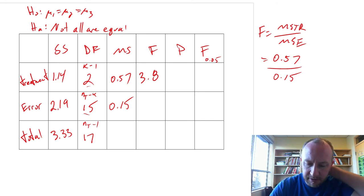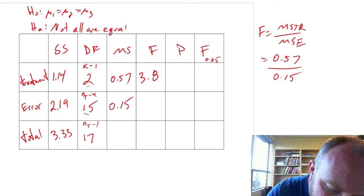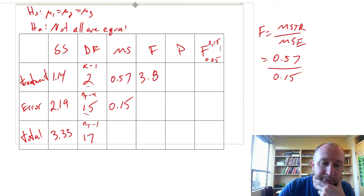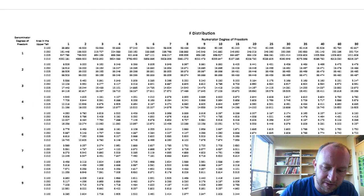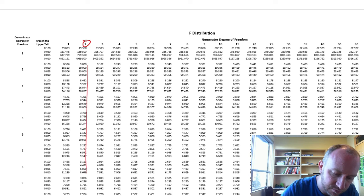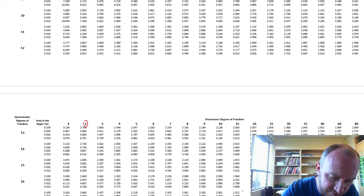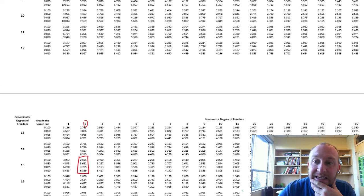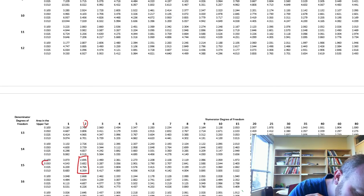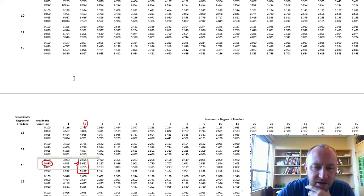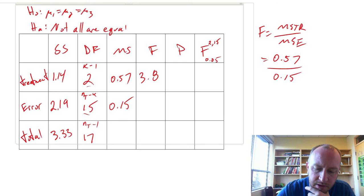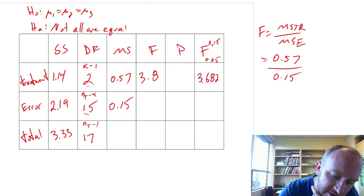Let's go to our F-tables. I want that critical F with 2 degrees of freedom and 15 degrees of freedom in the denominator. So we go to our F-tables. Numerator is 2. Coming down, I want to come down to 15 degrees of freedom. So here I'm looking at this block of numbers. Alpha was 0.05, so that gives me a critical value of 3.682.